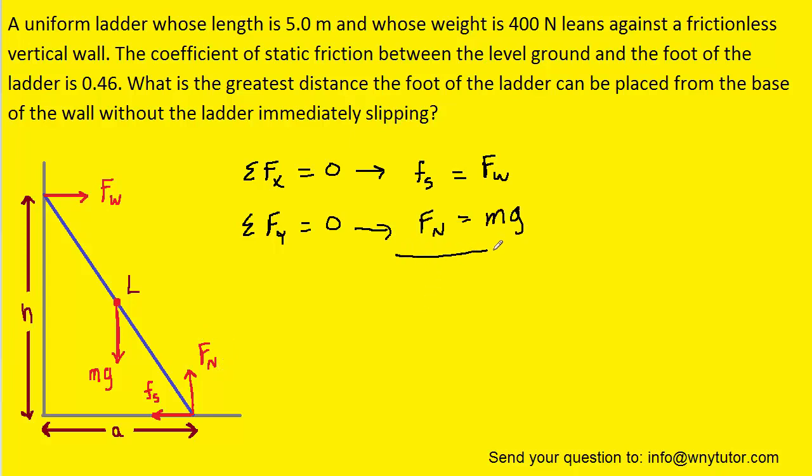Now if we take these two equations and divide them, we would have Fs over Fn is equal to Fw over mg. We should notice on this side that Fs divided by the normal force is equivalent to the coefficient of static friction. So we can replace this with that coefficient of static friction.